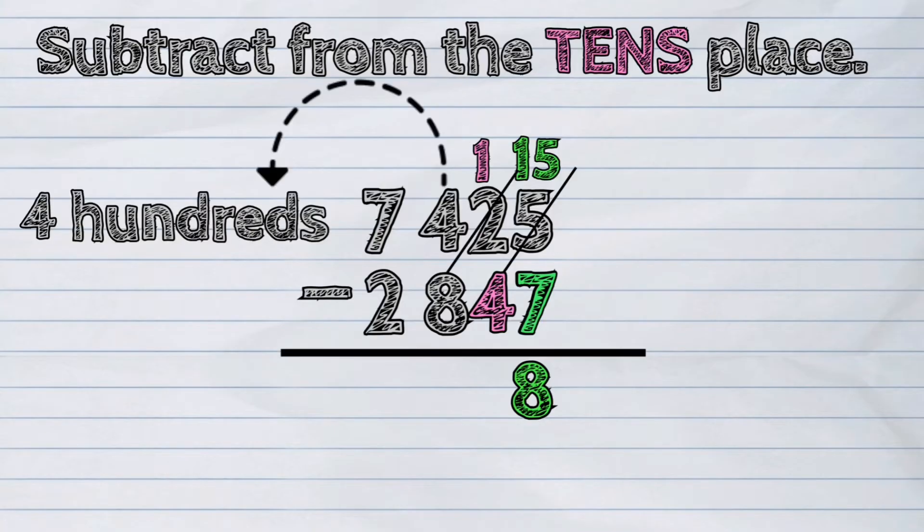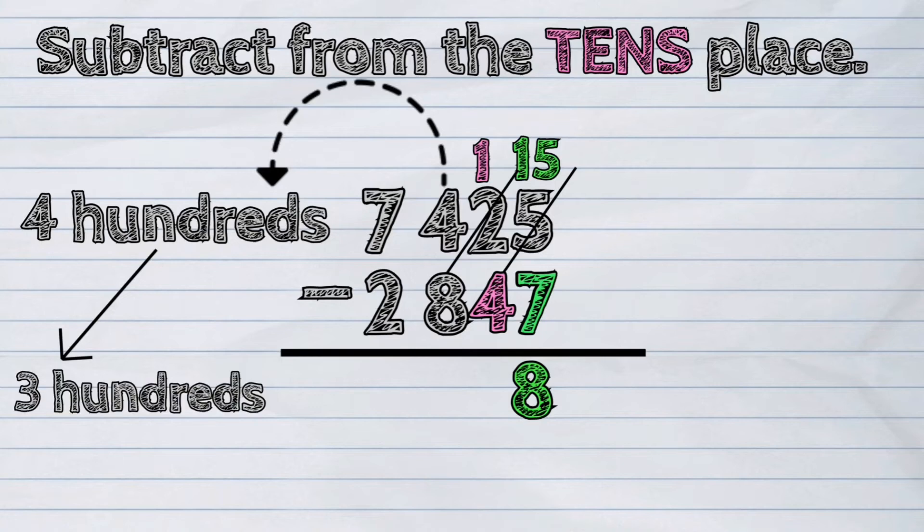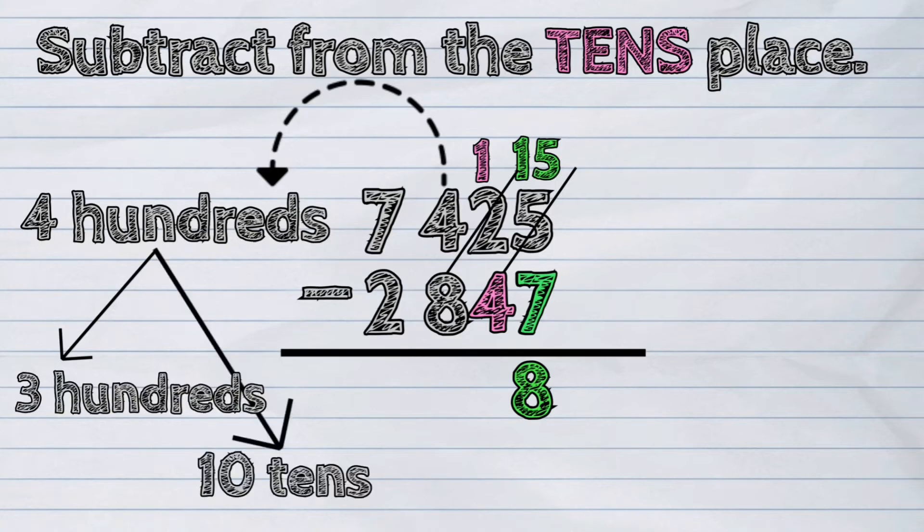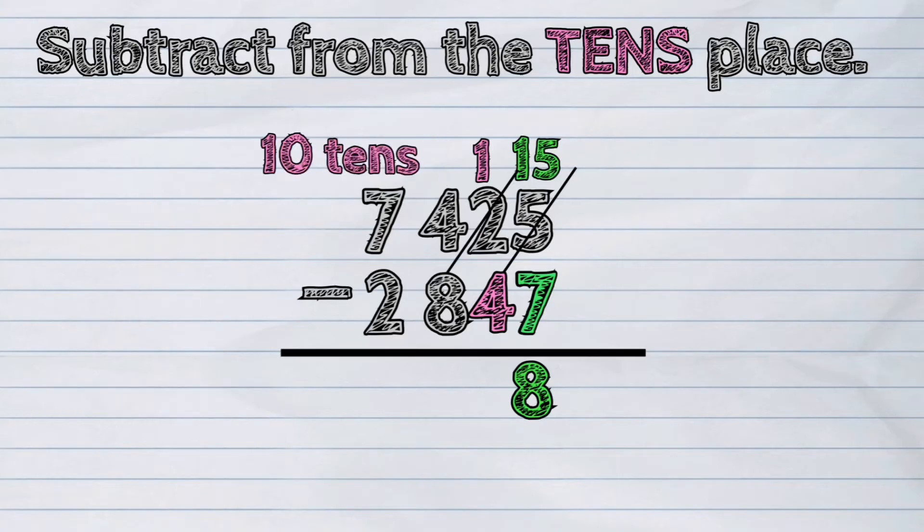Regroup four hundreds as three hundreds and ten tens. We will borrow a group of ten from the hundreds place. Now, ten tens plus one ten is eleven tens.